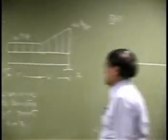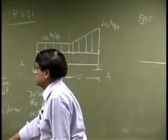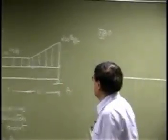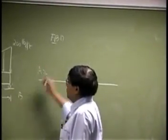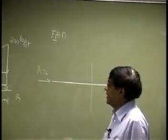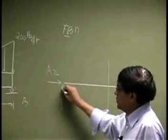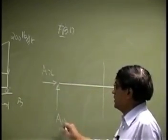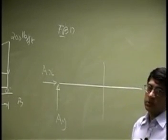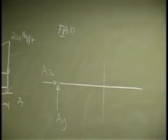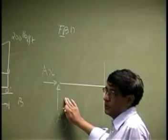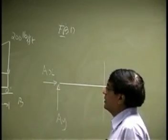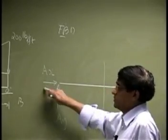A is a hinge, so we know there are going to be two unknown forces. I can show one unknown force as Ax and another unknown force as Ay. By having a pin at point A, you can always place two unknown forces at that point.